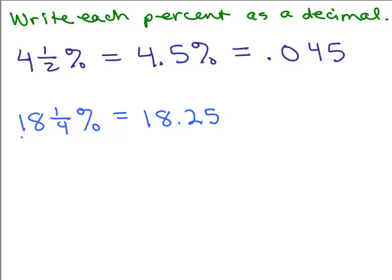So this is 18 point two five. I'm just rewriting the one fourth as point two five. I still have my percent sign. And now, to get rid of the percent sign, to rewrite this percent as a decimal, now I need to move the decimal two to the left. So it's point one eight two five.